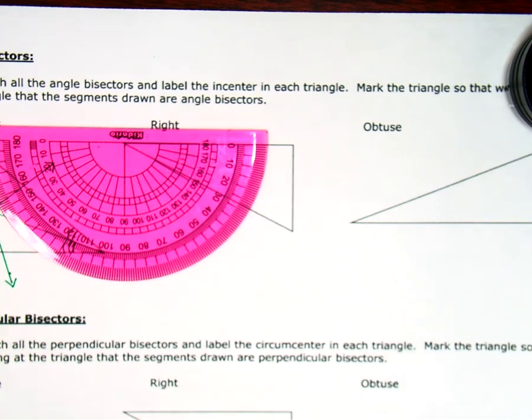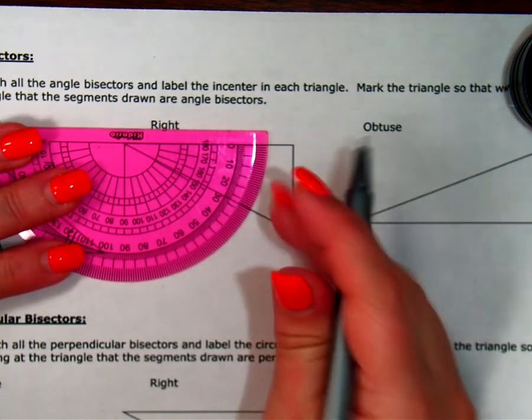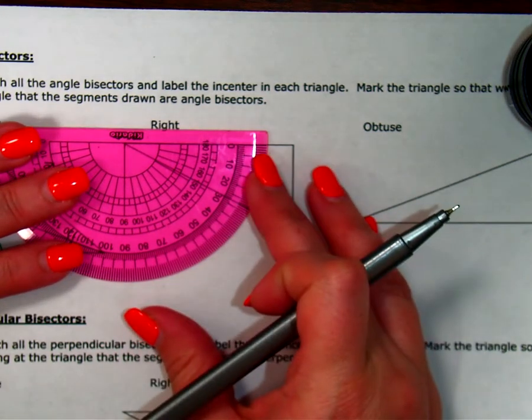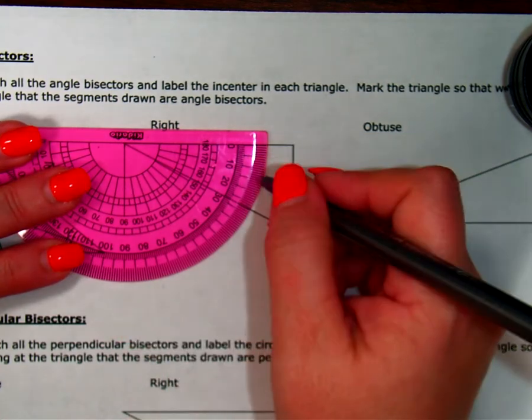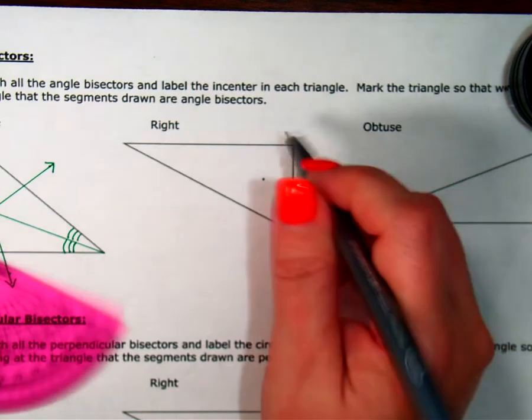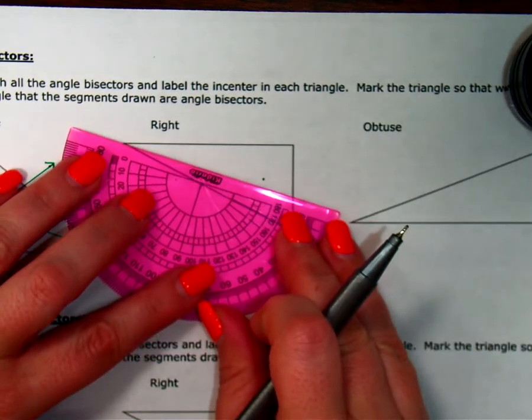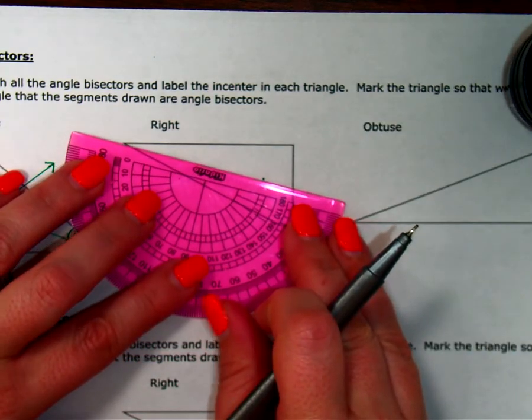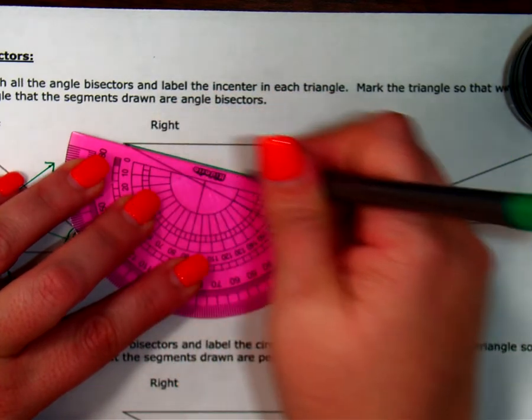So it's going to go to 14 degrees. So that's 10, that's 15, so one in front of that is 14. And then we line up and sketch our ray.